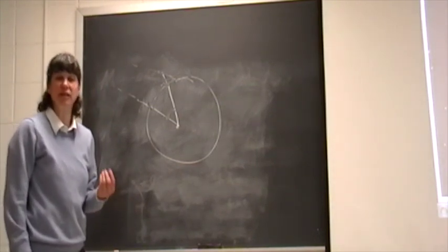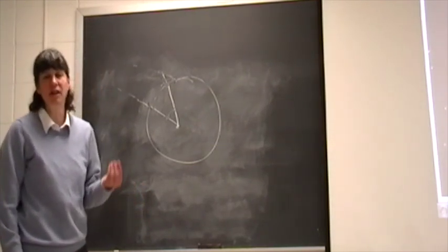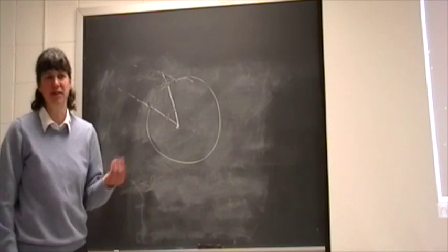So by measuring the length of the shadow at two different points on the Earth's surface, Aristosthenes was able to measure the size of the Earth.